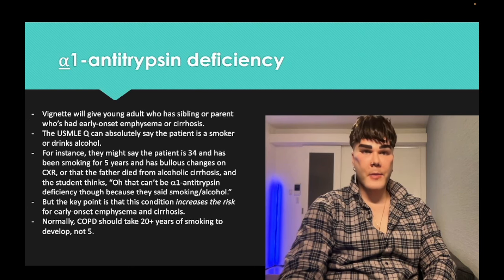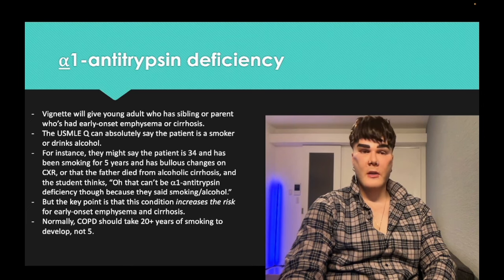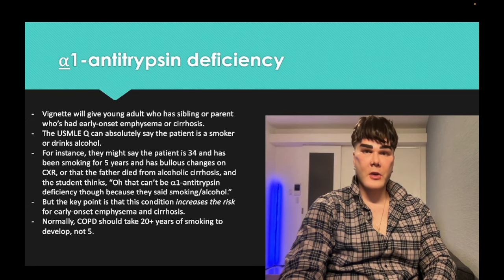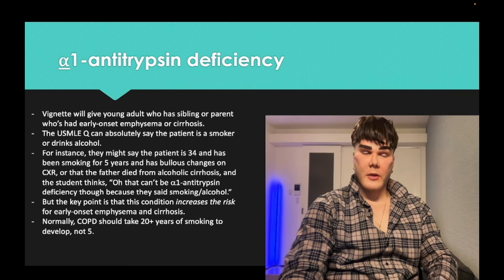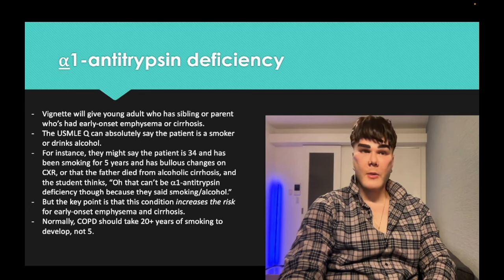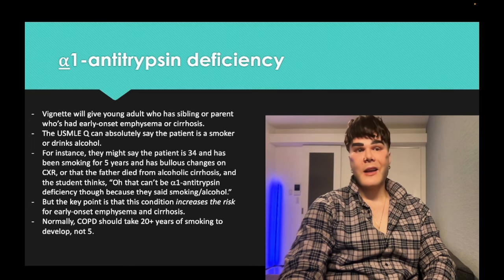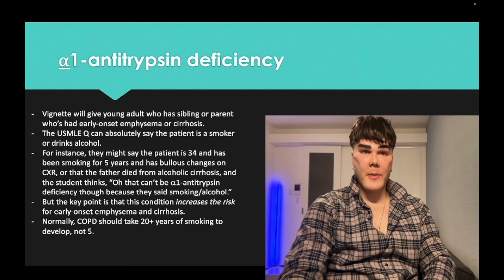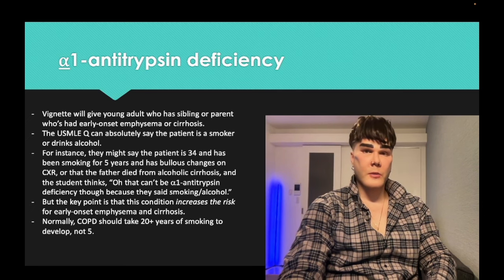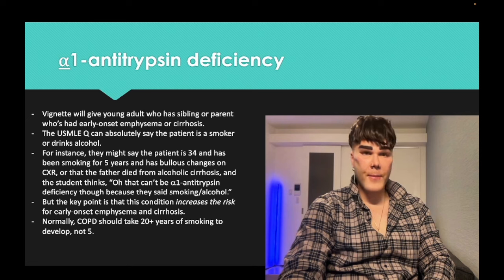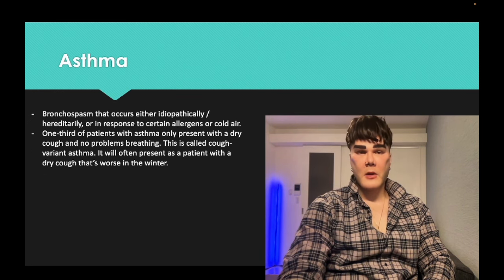Textbook alpha-1-antitrypsin deficiency is a 28-year-old who's never smoked with bullae and emphysema. But they can give a trickier vignette — a 34-year-old who smoked for five years whose dad died from alcoholic cirrhosis and presents with emphysema at 34. Alpha-1-antitrypsin deficiency causes accelerated emphysema and cirrhosis. Be careful: you shouldn't get cirrhosis from two beers a day or emphysema from smoking for just five years.